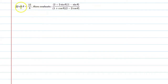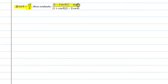Hello students, let's solve this question. If cot theta is equal to 15 by 8, then evaluate 2 plus 2 sine theta into 1 minus sine theta, upon 1 plus cos theta into 2 minus 2 cos theta.